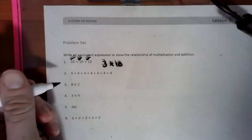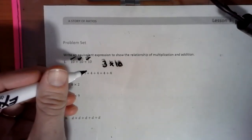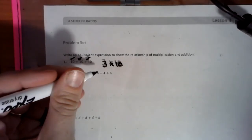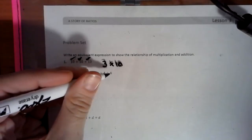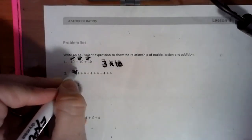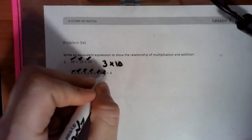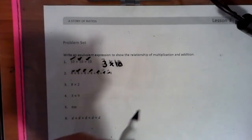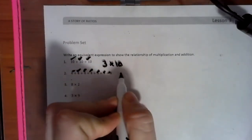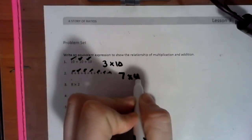So if we look at this next one, we have 4 plus 4 plus 4 plus 4 plus 4 plus 4. So we count: 1, 2, 3, 4, 5, 6, 7 — we have seven 4s. So that means we have 7 times 4.